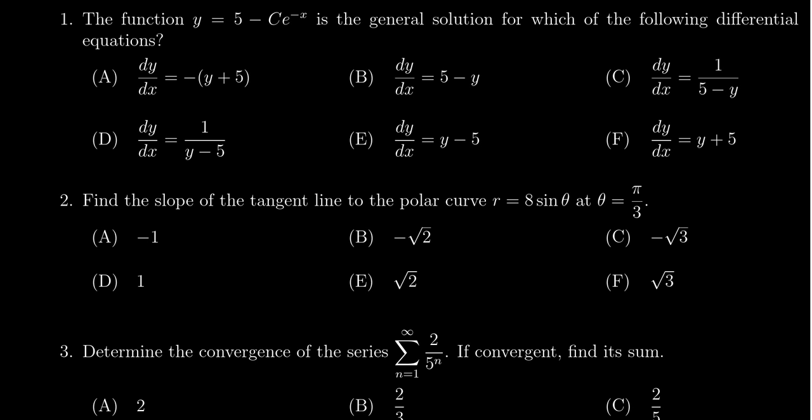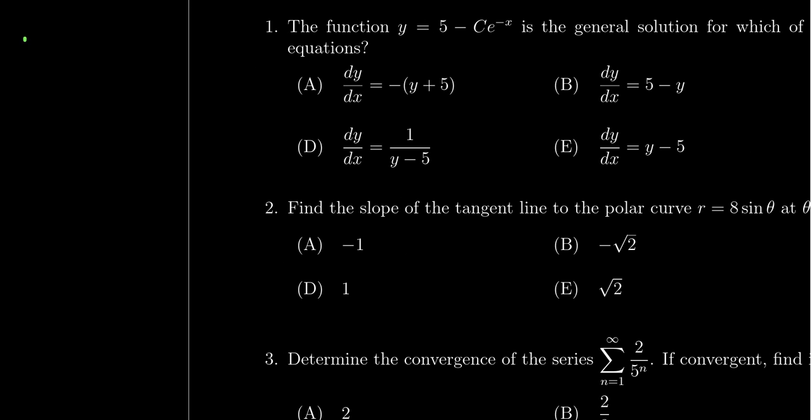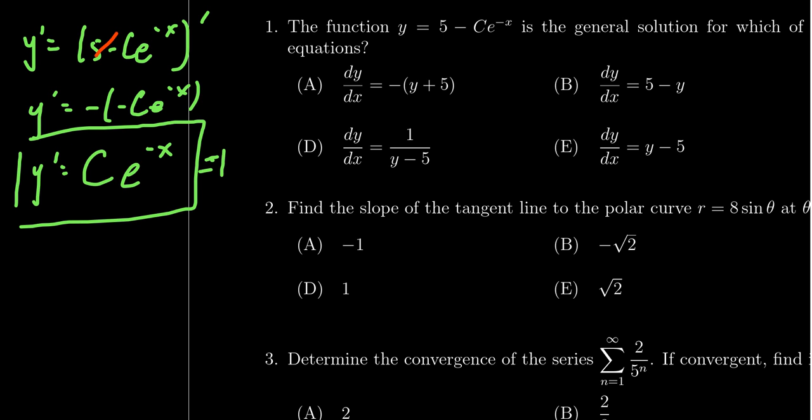If I was going to plug it into the first one, let's compute the derivative of y with respect to x. I'm going to do it over here. So if we calculate the derivative, y prime, this is going to equal 5 minus c e to the negative x prime. Derivative of a constant is 0. Then by the chain rule, the derivative y prime is going to equal negative negative c e to the negative x. That is, y prime equals positive c e to the negative x. This is the left-hand side of this first equation right here.